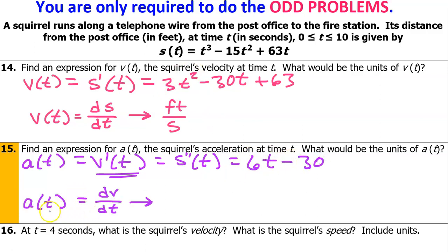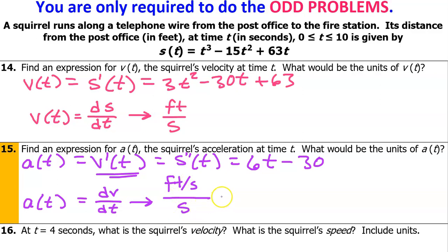Now let's think about the units of acceleration. Acceleration is the change in velocity divided by the change in time. We just established that the velocity units are feet per second. So feet per second will be in the numerator, and then the change in time — that's seconds again. So if we divide feet per second by seconds, that's going to give us feet per second squared, which can also be described as feet per second per second.